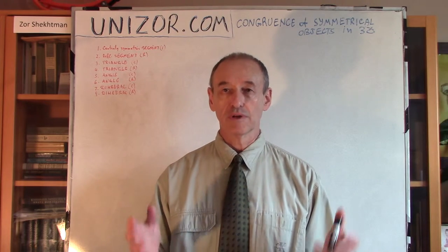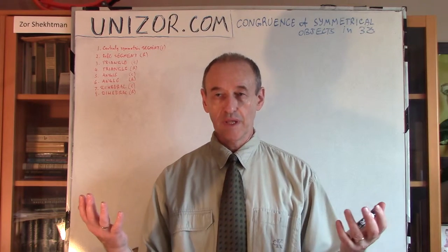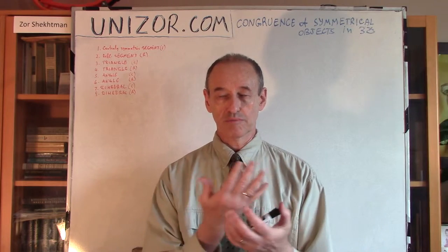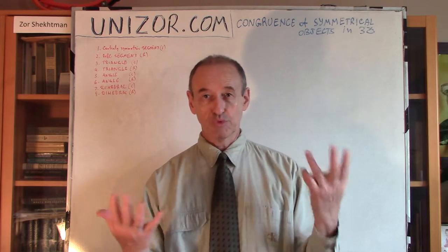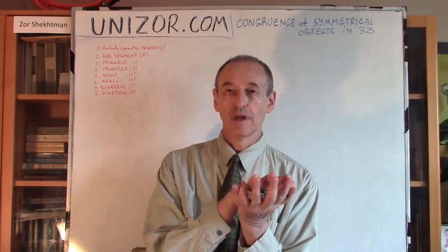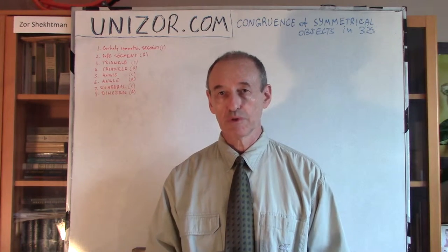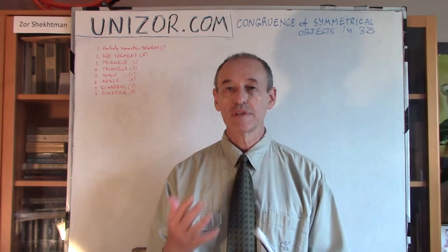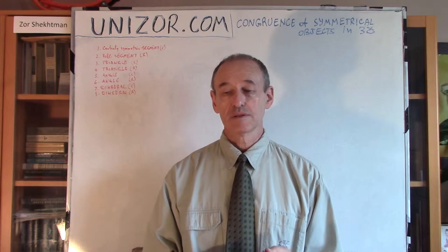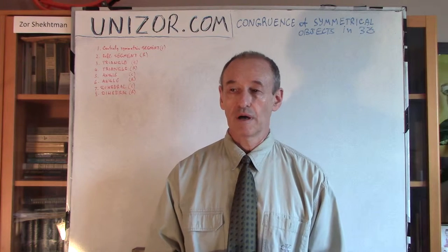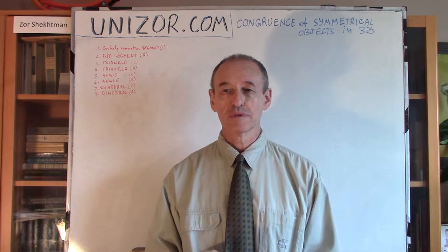Obviously, we all know that symmetrical figures are almost equal. They are either completely equal — in the sense that you can put one on top of another and they will coincide — or they are, so to speak, symmetrical like two different hands, where you have to turn something around and then they will coincide. In mathematical terms, this likeness is called congruence. In my younger days it was called basically equality, but nowadays it's more customary to use the term congruence.